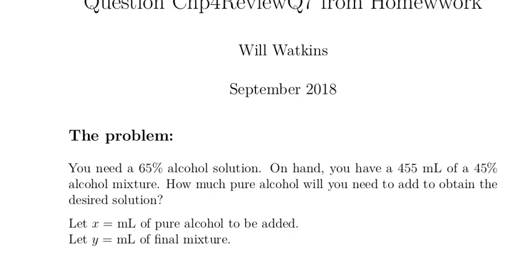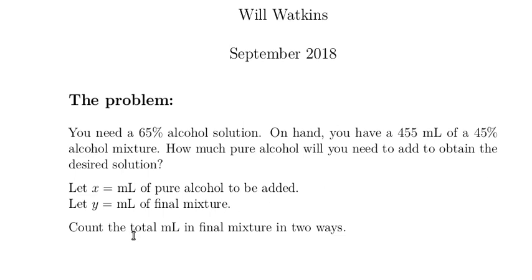Now let's look at some things we can calculate with those values. We're going to count the total milliliters in the final mixture in two ways. We define y to be the milliliters in the final mixture, and the final mixture will be made up of the milliliters of pure alcohol that we put in plus the 455 milliliters of 45% alcohol mixture.